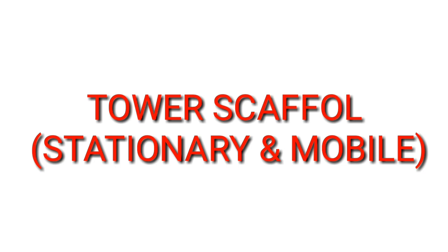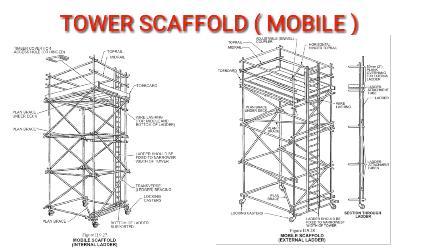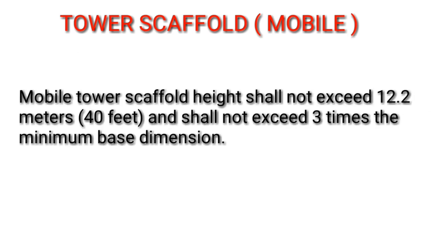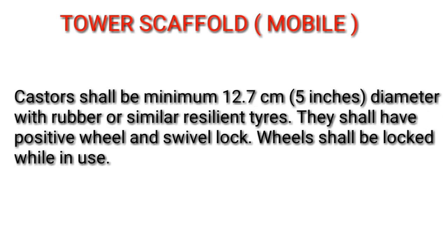Tower scaffold — stationary and mobile. Stationary tower scaffold height shall not exceed 18.3 meters (60 feet) and shall not exceed 4 times the minimum base dimension. If a 1-to-4 ratio cannot be maintained, the tower shall be stabilized by guying or other means. Mobile tower scaffold height shall not exceed 12.2 meters (40 feet) and shall not exceed 3 times the minimum base dimension. Castors shall be a minimum of 12.7 cm (5 inches) diameter with rubber or similar resilient tires. They shall have positive wheel and swivel locks. Wheels shall be locked while in use.